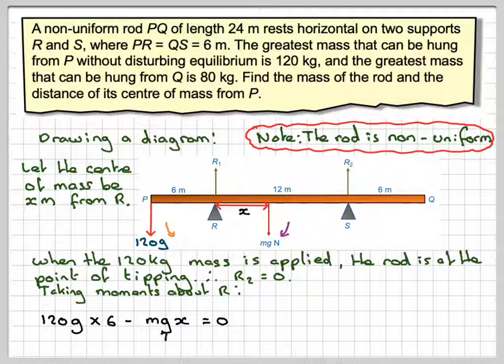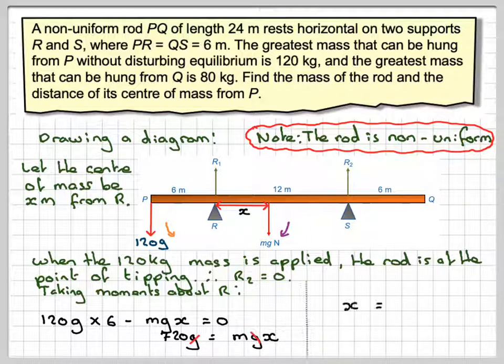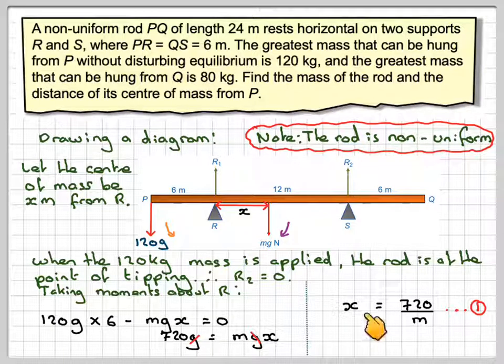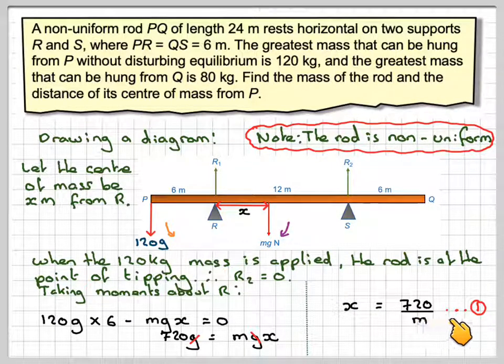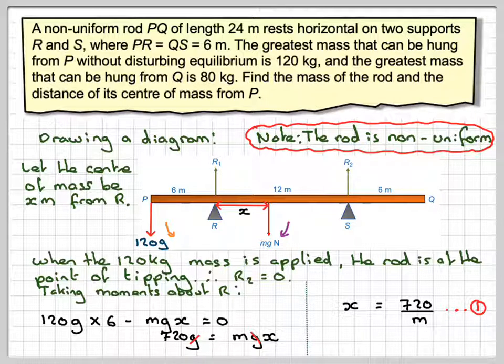So six times 120 is 720G. If we take the MgX over to the other side and rearrange, the G's will cancel out. So X will be equal to 720 over M. We'll call that equation one.